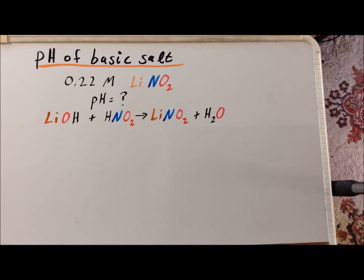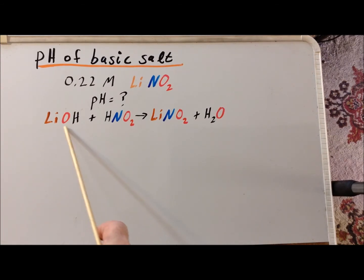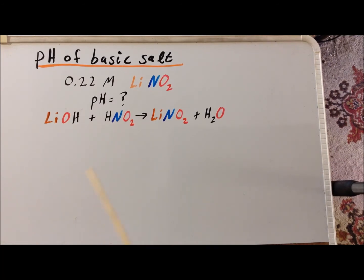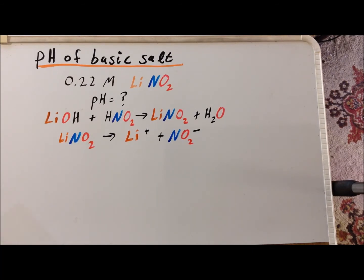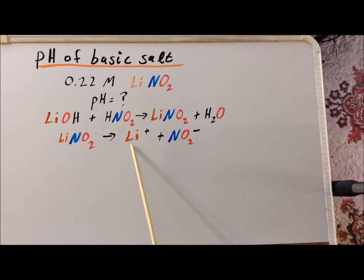We can imagine the formation of lithium nitrite, a salt, as a reaction between the strong base lithium hydroxide and the weak acid nitrous acid, HNO2, to give us the salt plus water. We recall that salts are strong electrolytes, that in aqueous solution they dissociate completely, and that is true for lithium nitrite. After dissolution in water, we get lithium ion plus the nitrite ion.